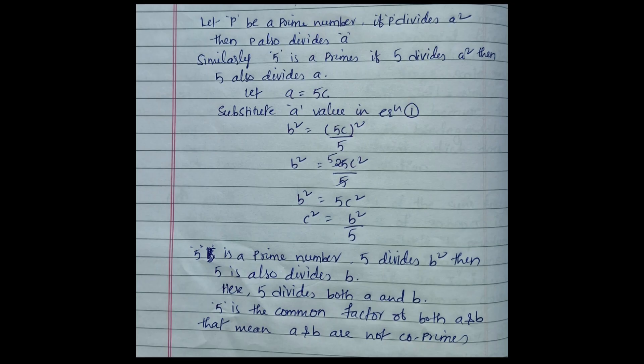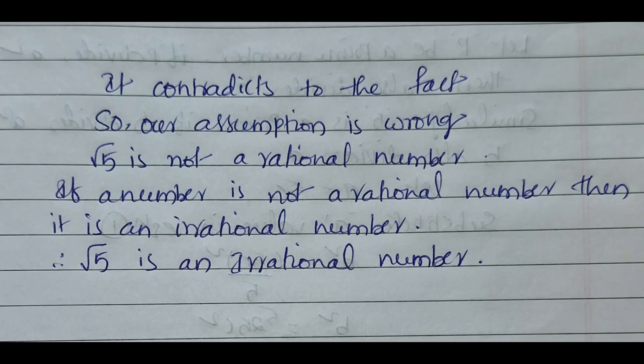With this theorem, since 5 is prime and 5 divides a squared, 5 also divides a. So let a equal 5c. Substituting in equation 1: b squared equals 5c whole square by 5, which simplifies to 5b squared equals 5c squared, so b squared equals c squared by 5. Applying the same theorem, 5 also divides b. Now 5 divides both a and b, meaning they are not co-primes — this contradicts our assumption. Therefore our assumption is wrong, root 5 is not rational, so root 5 is an irrational number.